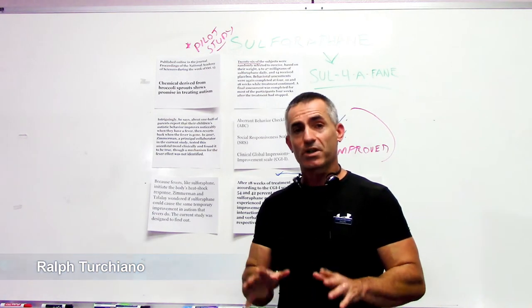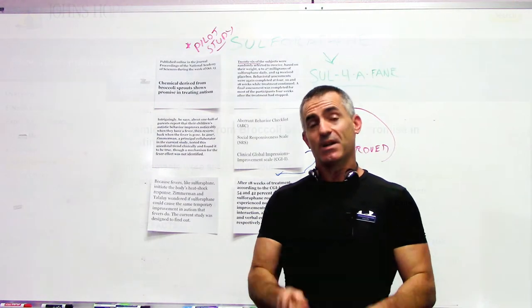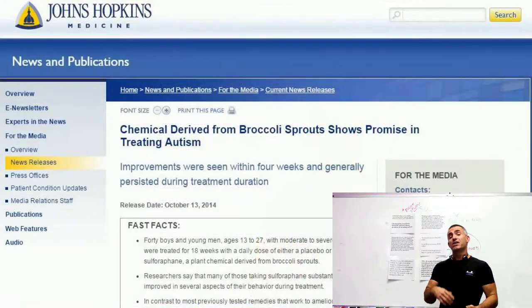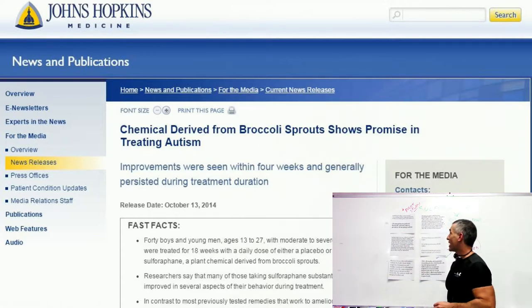In what was beautiful research work done by Johns Hopkins University, they discovered a connection. In this article published in the Proceedings of the National Academy of Sciences, October 13, 2014, titled Chemical Derived from Broccoli Sprouts Shows Promise in Treating Autism.